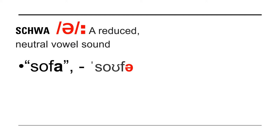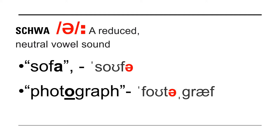Schwa is a reduced neutral vowel sound. For example, the last sound in 'sofa' — sofa. Another interesting example is the second vowel sound in the word 'photograph' — photograph. An interesting thing about the word photograph is that it has three syllables. We use the schwa sound for the second syllable, which is an unstressed syllable.